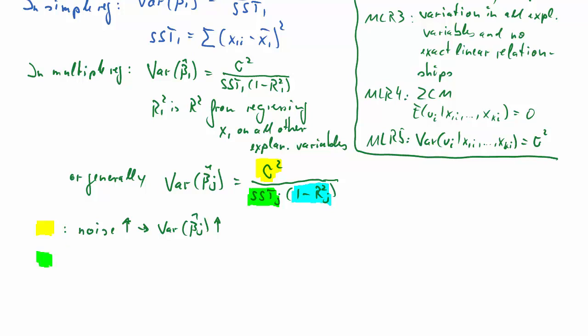The next term we are looking at is the sum of squared totals of the explanatory variable in question, so the variable for which we want to estimate the coefficient. And in general, the rule is such that if the variation in that variable increases, that means SSTj increases, that will result in smaller variance for the coefficient estimates, so more precise coefficient estimates.